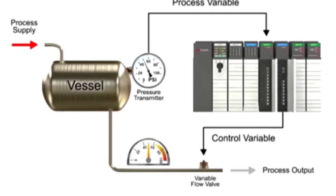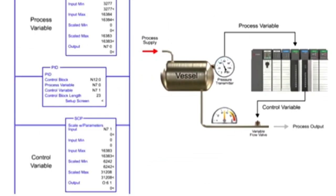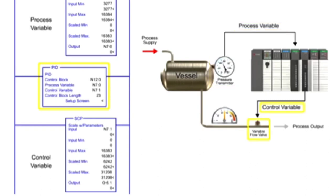In the following program example, the PID instruction is used to control pressure of a vessel, using a pressure transmitter as the process variable and a flow valve as the control variable. The set point is maintained at 50 PSI.